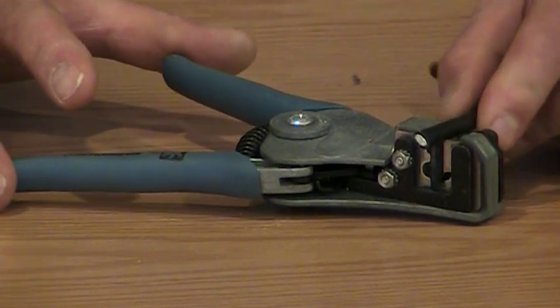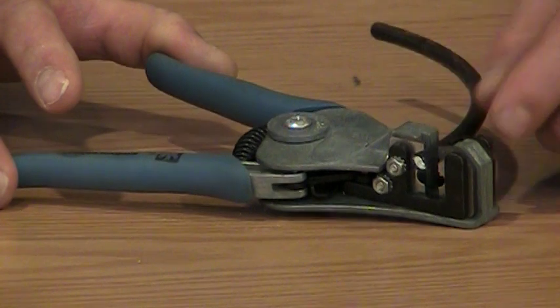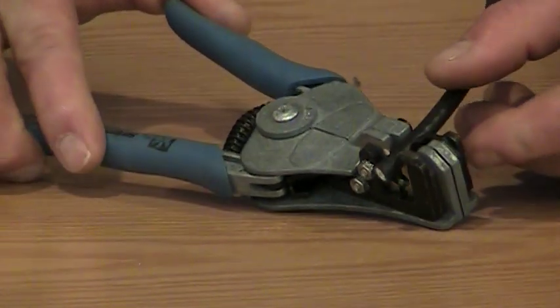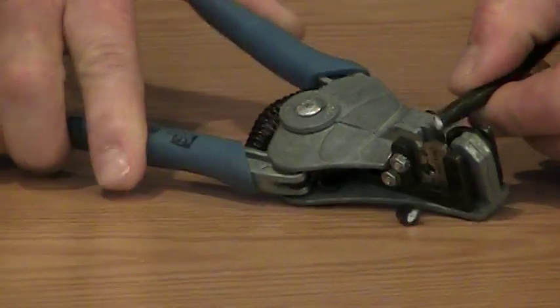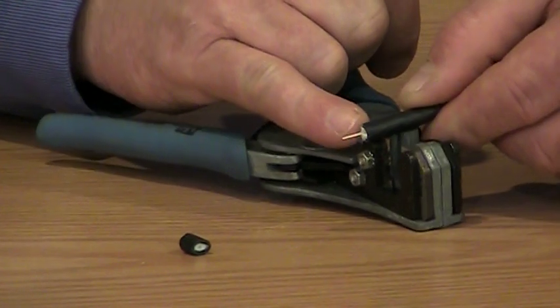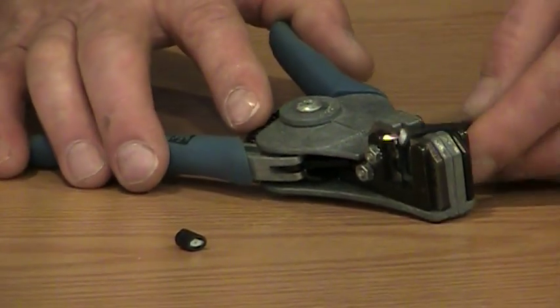We're going to insert the coax in the back end of the tool. I need to remove about a quarter inch to expose the center conductor. So I'm going to center the wire on the little hole and squeeze down here. Now it took everything off the cable for me and exposed basically a quarter inch of my center conductor, which is the first part of our strip.